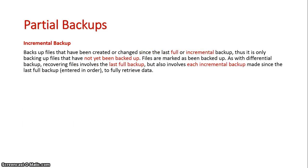The next type of partial backup is an incremental backup. An incremental backup differs because it backs up everything since the last incremental backup or full backup. So it takes into account that other backups have been done in between the last full backup and the current incremental backup.